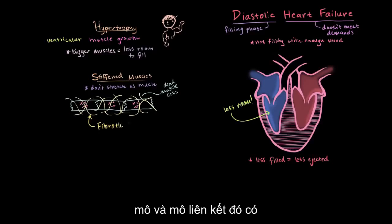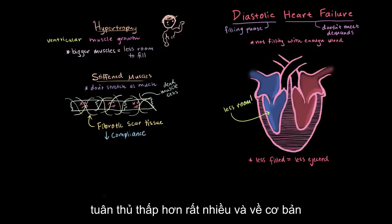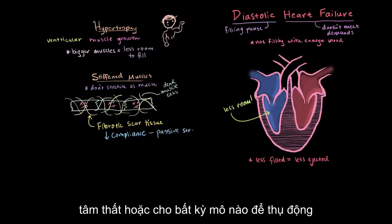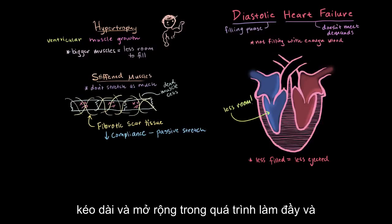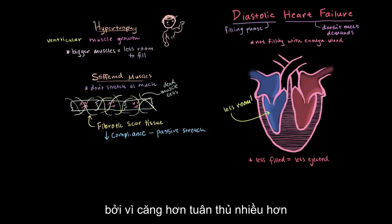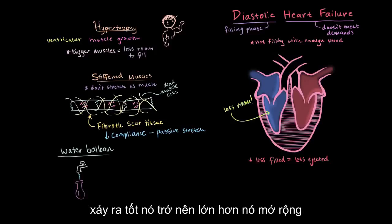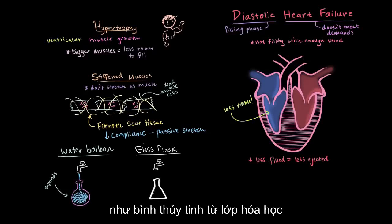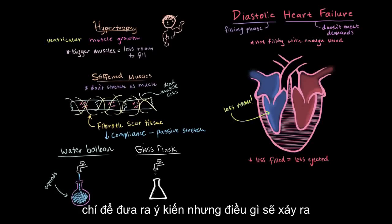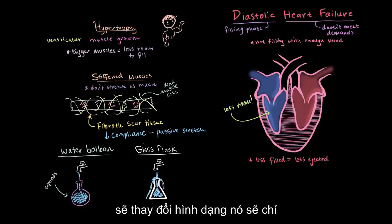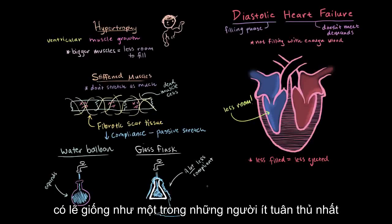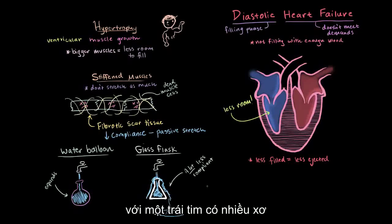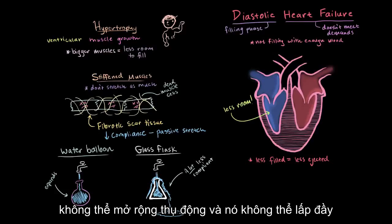This fibrotic tissue is connective tissue with a lot lower compliance. Compliance is the ability for the ventricle — or any tissue — to passively stretch and expand during filling. More compliance means it can fill more, it can get more blood. Think of filling a water balloon: when you put water in, it gets bigger passively. Now think about filling a glass flask from chemistry class — it's not going to get bigger or change shape, it's just going to fill up and overflow. That's because it's far less compliant. It's the same with a heart full of fibrous connective tissue — it can't relax, can't passively expand, and can't fill completely.